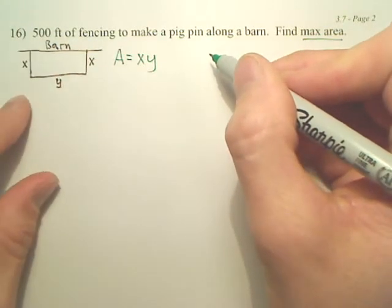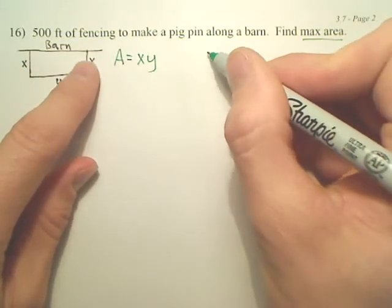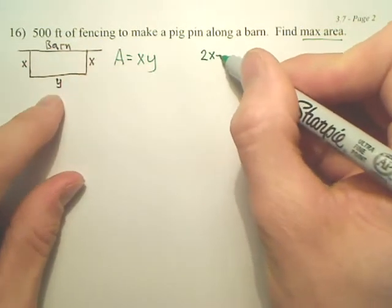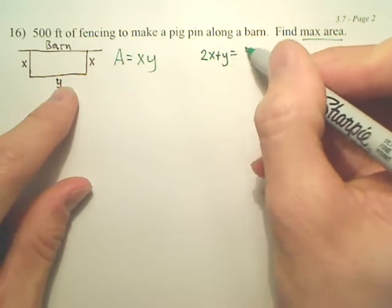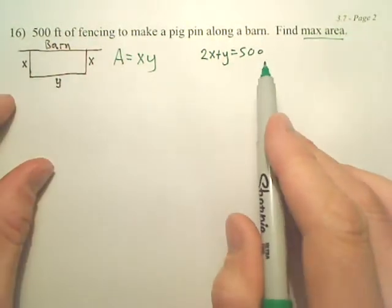What does my perimeter equal? 500. What are all the sides? Well, 2x plus y equals 500. I have two x's and a y. It should add up to 500.